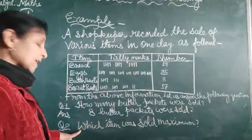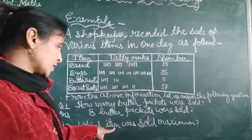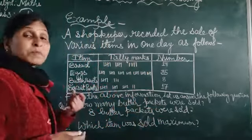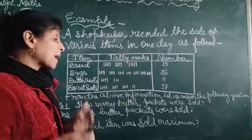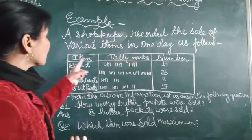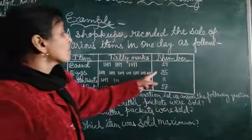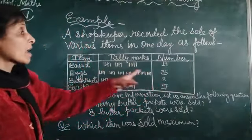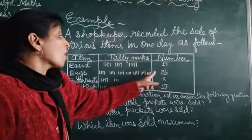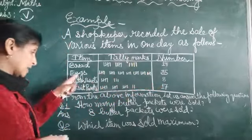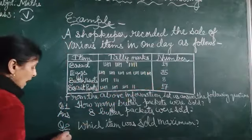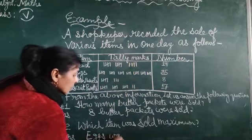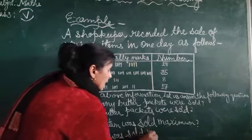Now, the second question, that is which item was sold maximum? Kaun sa item, sabse zyada because sold gaya hai. Maximum means, sabse zyada. Toh, hamein information ko dekhayenge, yaha pe dekhayenge ki number, sabse zyada number kiska hai, that is the eight. Hamein wo item dekhna hai, hamein mein se, sabse zyada number is thirty five hai, aur is kyunki ka item name dekhna, that is the eight. So, which item was sold maximum? And writing the answer in this way, eggs was sold maximum.